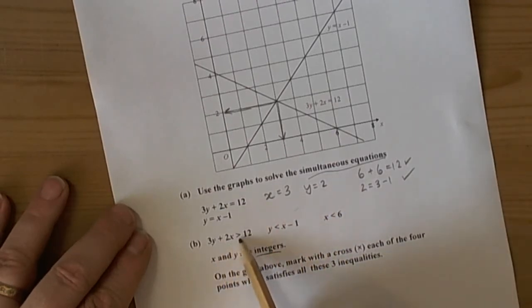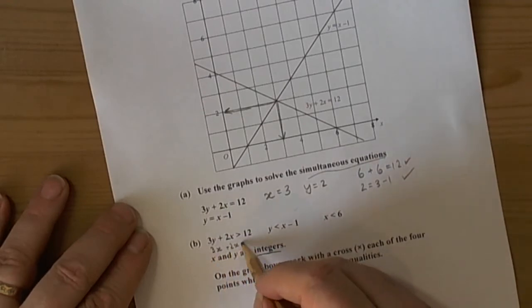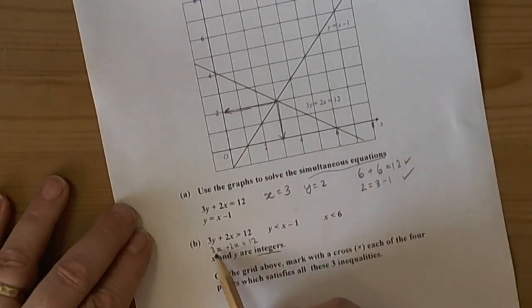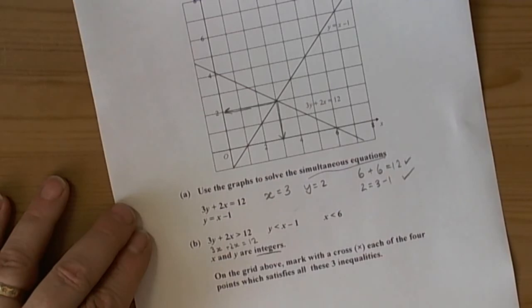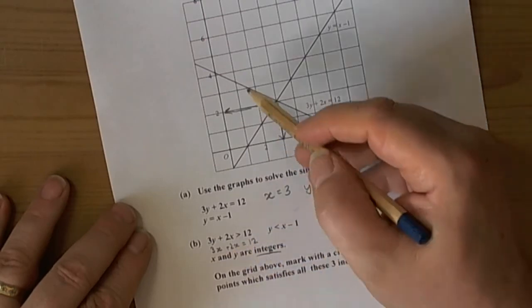The first inequality is 3y plus 2x greater than 12. When we show inequalities on graphs, we look for the boundary line defined by an equals. So the boundary line is 3y plus 2x equals 12. They've already drawn that for us, so we just need to shade the right part. The values have to be greater than 12.